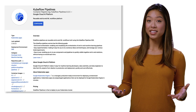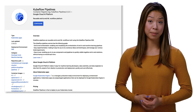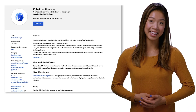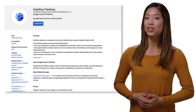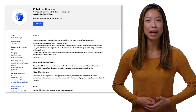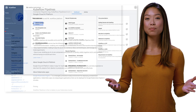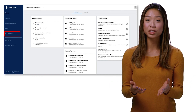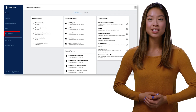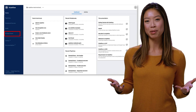In particular, KUBEFLOW pipelines automatically logs information about a run, including workflow artifacts, executions, and lineage. You can see this pipelines feature in action with the Cloud AI Platforms Pipelines installation. Models and data sets can then be visualized in the metadata web UI so that you can start tracking them out of the box with no extra work required.